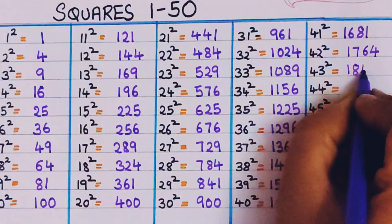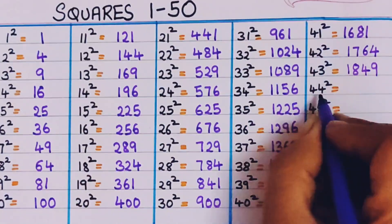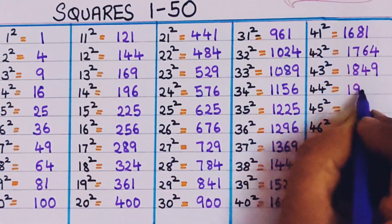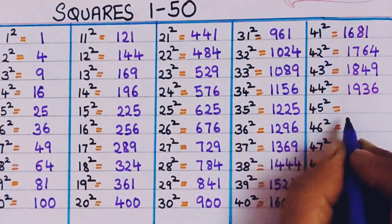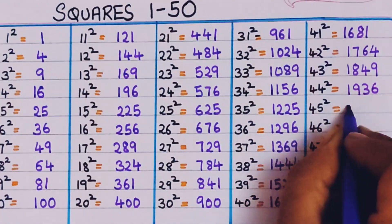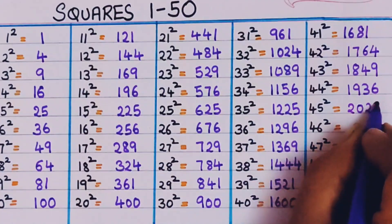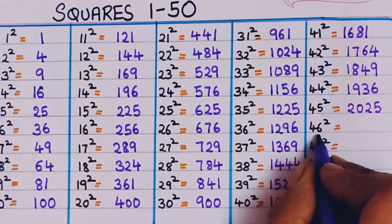43 square, 1849. 44 square, 1936. 45 square, 2025.